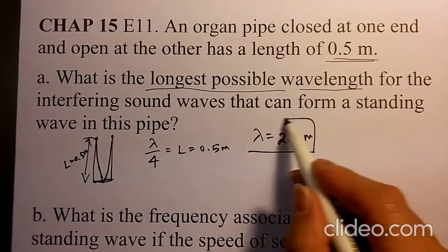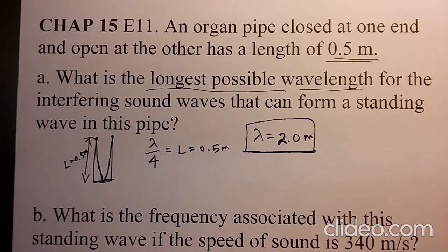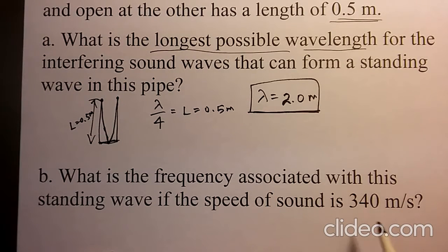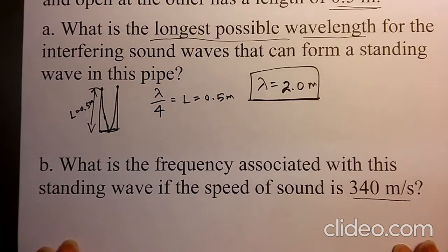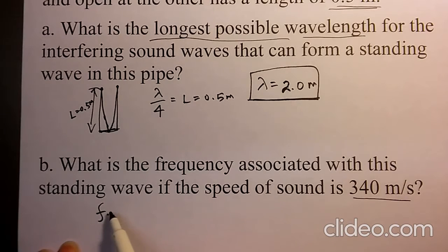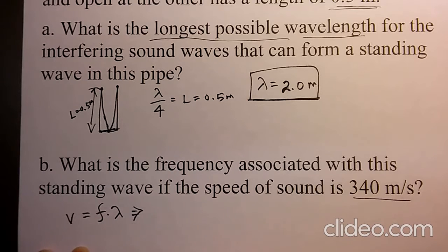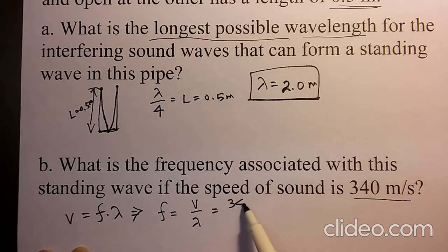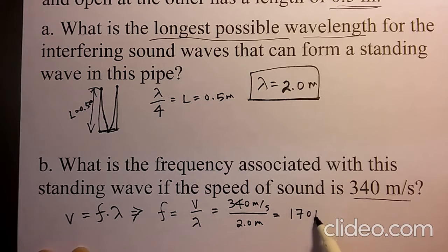The longest wavelength is 2.0 meters. What is the frequency associated with this standing wave if the speed of sound is 340 meters per second? Using frequency equals V over lambda: 340 divided by 2.0 meters gives 170 hertz as the frequency.